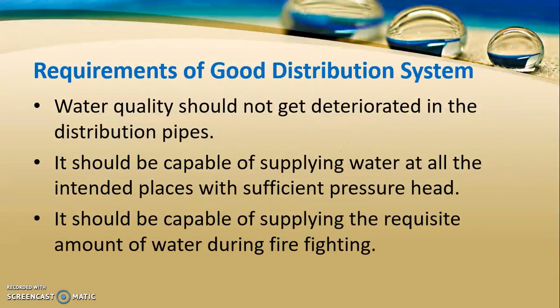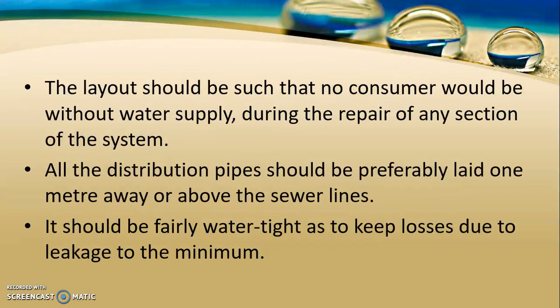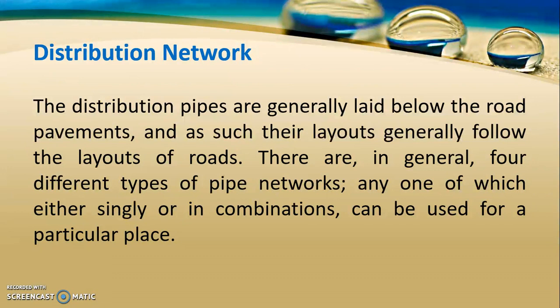The distribution system should be such that water quality does not deteriorate in the pipes. It should be capable of supplying water at all intended places at sufficient pressure and supplying the required amount during firefighting. No consumer should be without water supply. Pipes should be placed 1 meter above or below the service sewer line to avoid contamination. Distribution networks are mostly provided below the road, following the layout of the roads. Distribution networks will be discussed in another lecture.